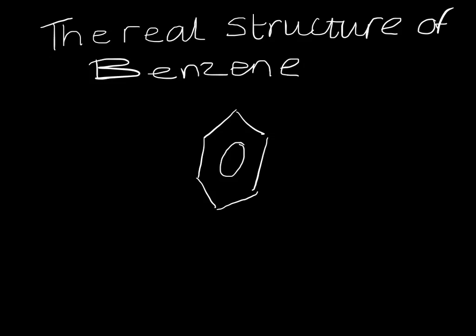In the real structure of benzene, there are no double bonds, only an area of delocalized electrons. Overlapping p orbitals on carbon-carbon bonds form a pi bond above and below.